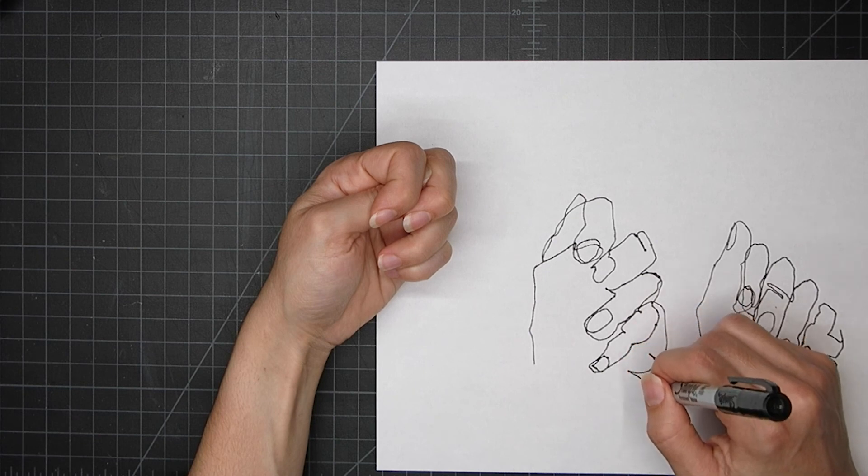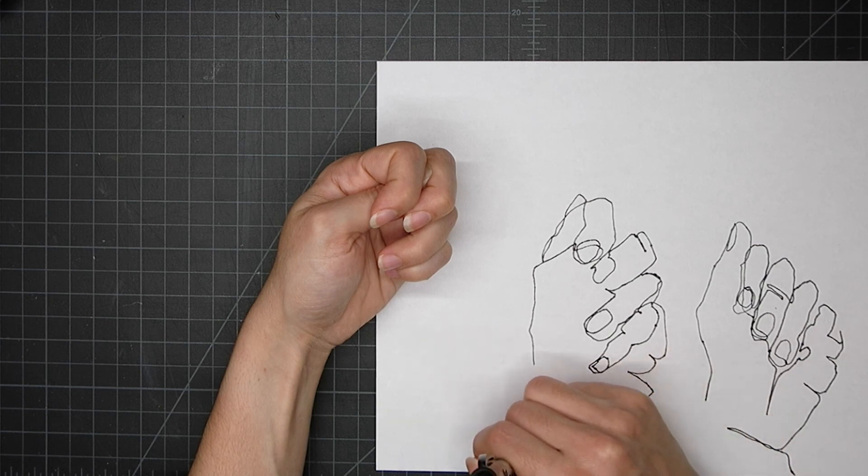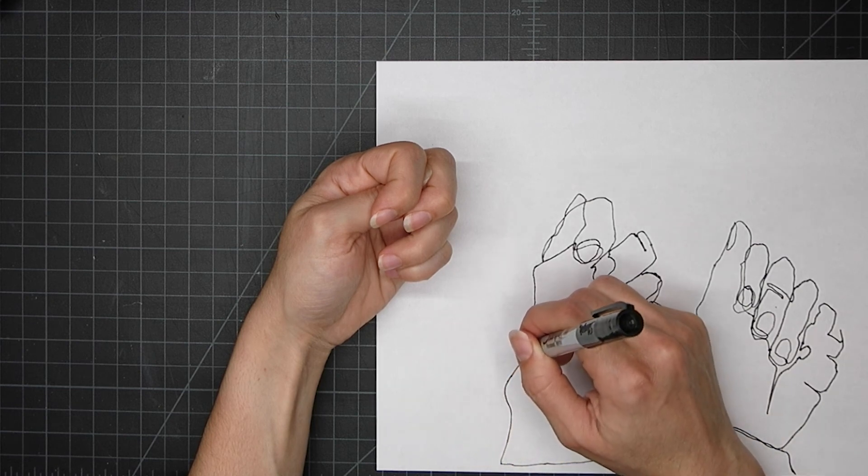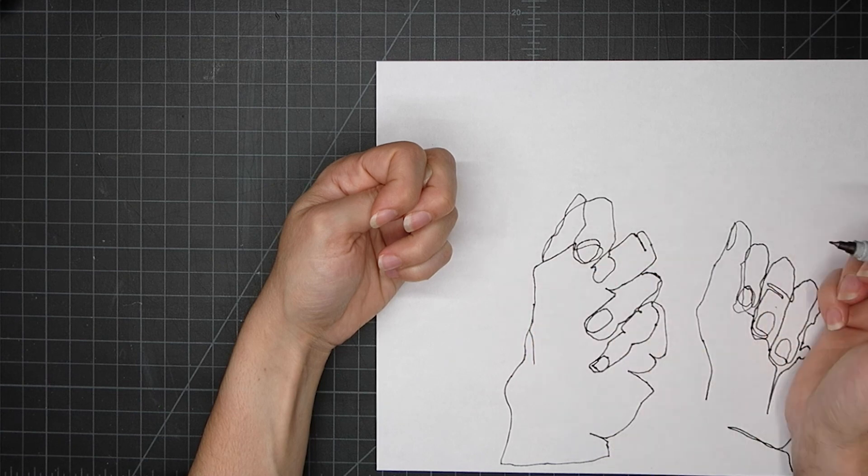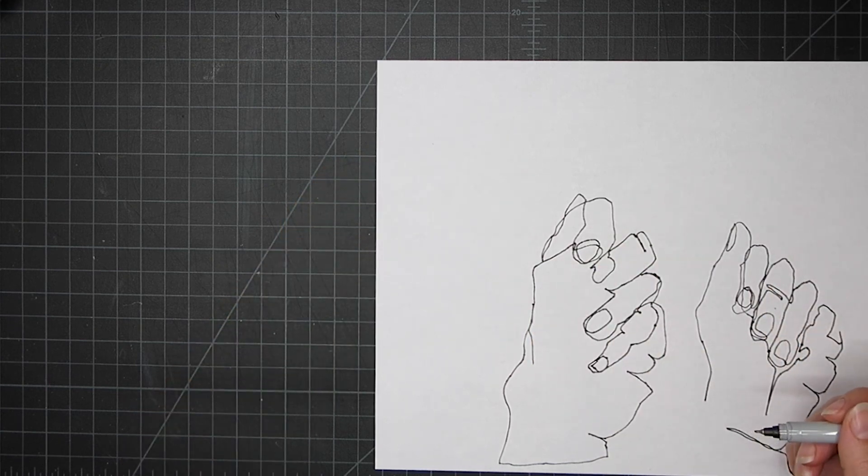You can see this is the basic process for creating a blind contour drawing with a continuous line. Now I'd like you all to make five drawings of your hand on one piece of paper. Thank you very much.